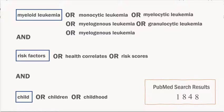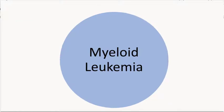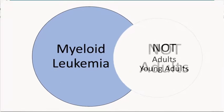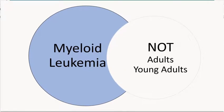NOT tells the database to eliminate articles that use a specific term. For example, typing "myeloid leukemia NOT adults" will find articles dealing with myeloid leukemia but remove any articles that mention adults. It's recommended to use this operator sparingly since it may eliminate relevant results — for example, eliminating adults may also eliminate articles that mention young adults.